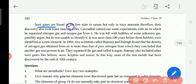Inert gases were found in the free state in nature but only in trace amounts, therefore their discovery also took some time. We call them inert gases because they are found in trace amounts only, and also their outermost shell is filled so they don't need electrons to fill their octet. That is why they don't react with any other element.